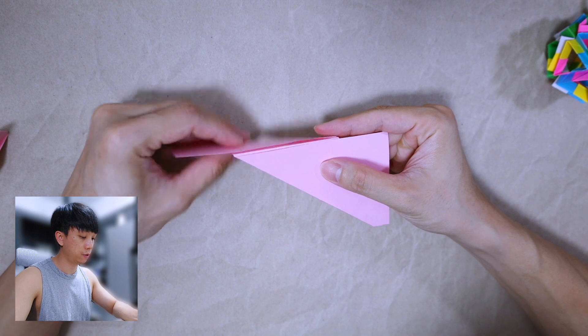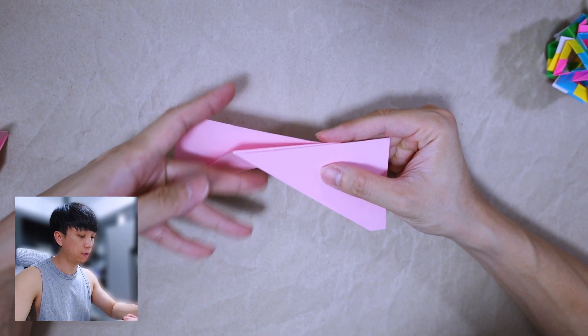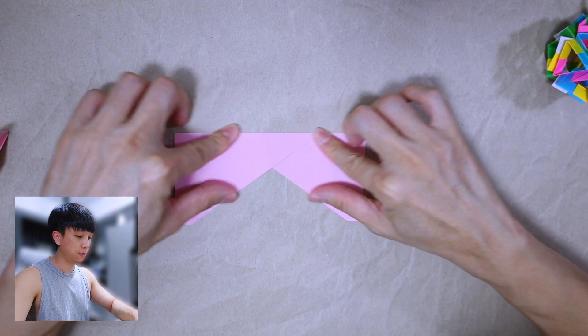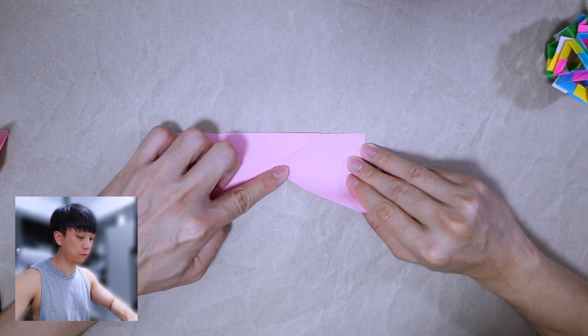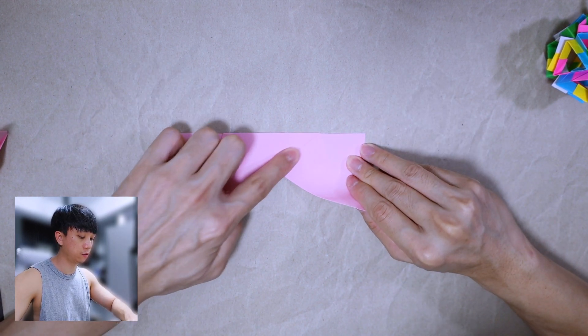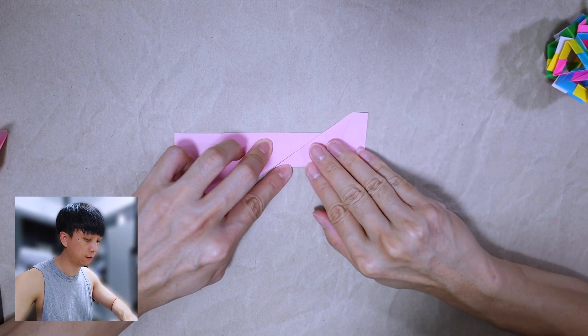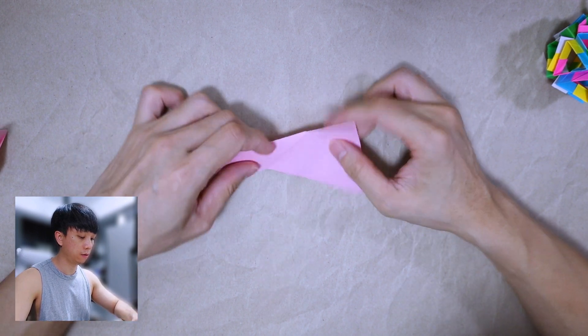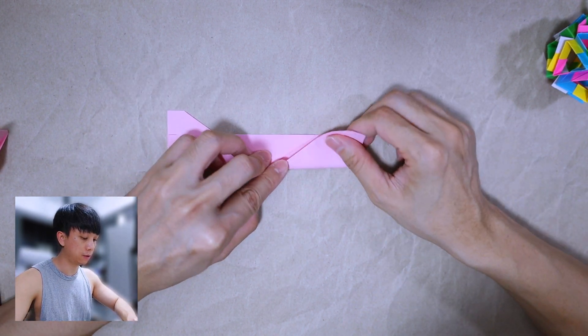We want to bring this one, flip it over like this. And once this is done, just fold this, bring this edge to meet this line here. Turn over and repeat the same.